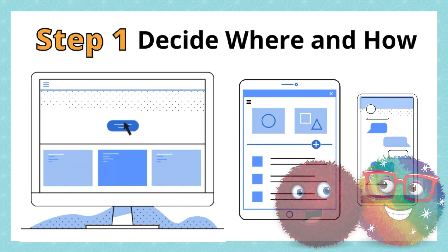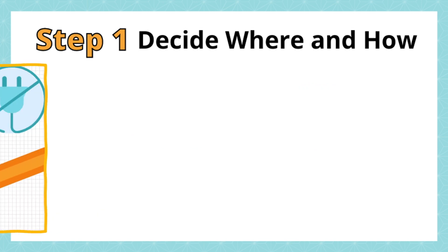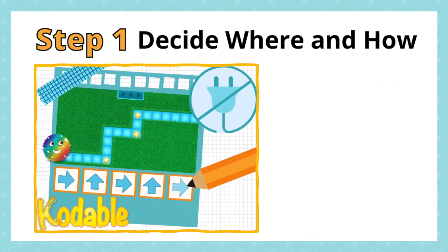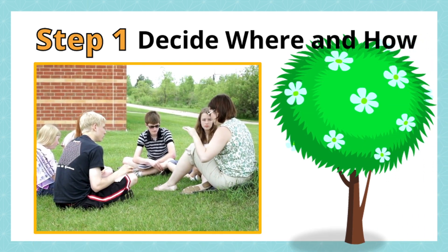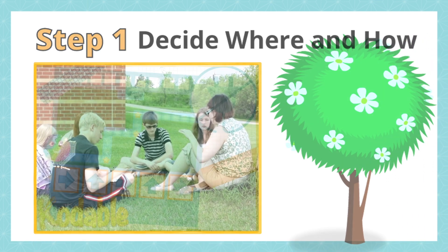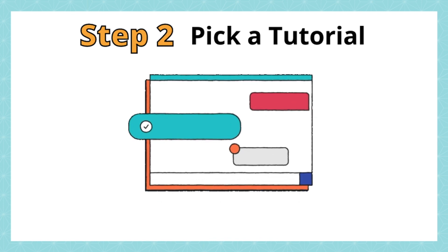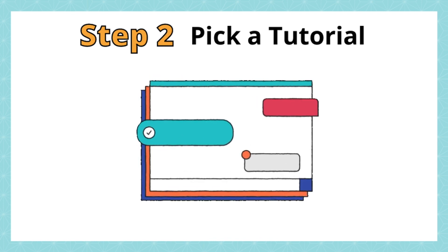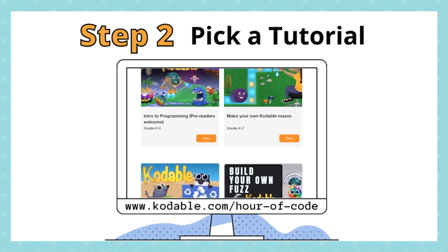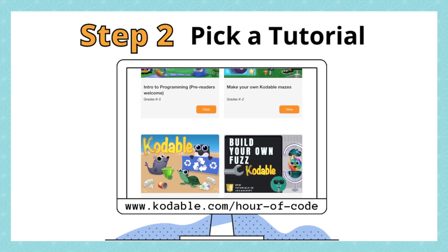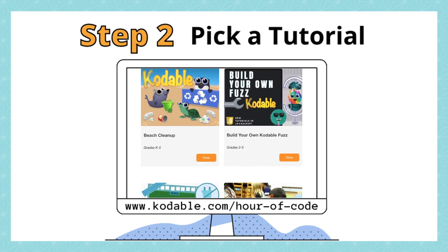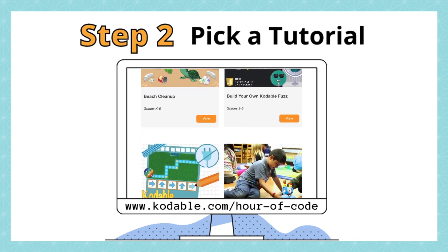But computational thinking isn't just about computers. We have unplugged activities too that can be completed without any device at all, even outdoors. Step 2: Pick a tutorial. We have over 15 one-hour tutorials to choose from for kids in grades K–5.